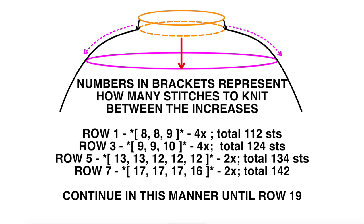Then I move on to row 7. 134 divided by 8 gives a number between 16 and 17, so I play with the numbers for even distribution: increase after 17, after 17, after 17, then after 16 — repeated twice. That gives me 8 more stitches and 142 stitches total. In row 9 I'd work with 142 divided by 8, and figure out after how many stitches to place my 8 increases. I think you get the idea.